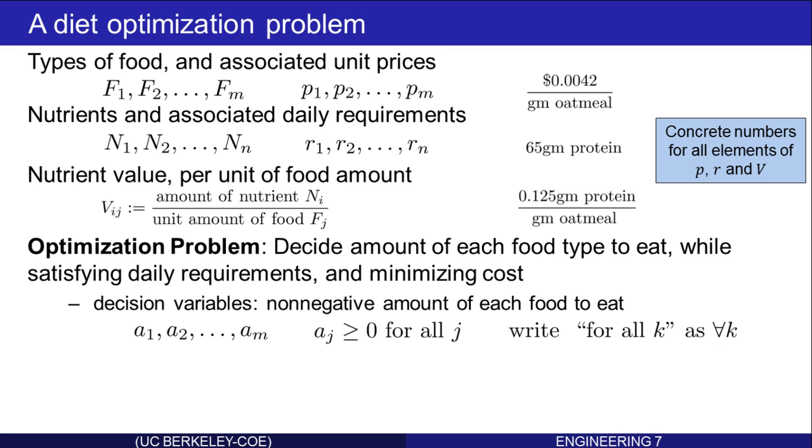Next, we need to meet the daily requirements for all of the nutrients. Here's an inequality that states that the amount of nutrient I I get from eating amount A1 of food 1, and amount A2 of food 2, and all the way up to amount AM of food M, must exceed the daily requirement for nutrient I.